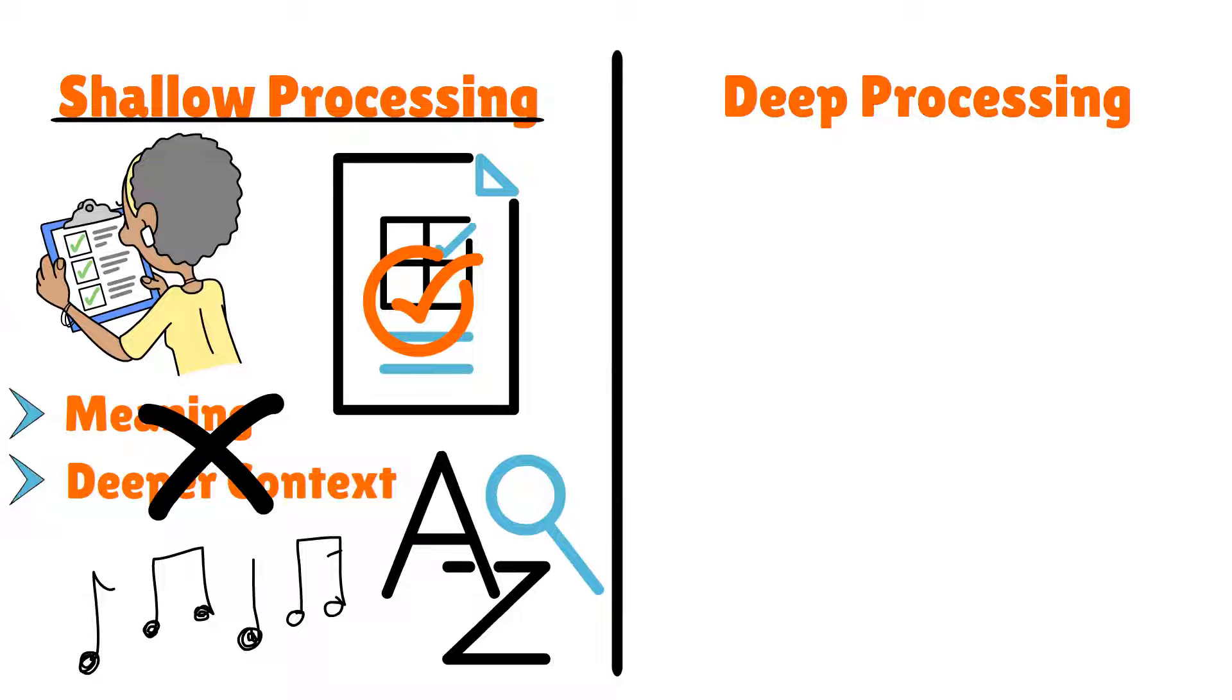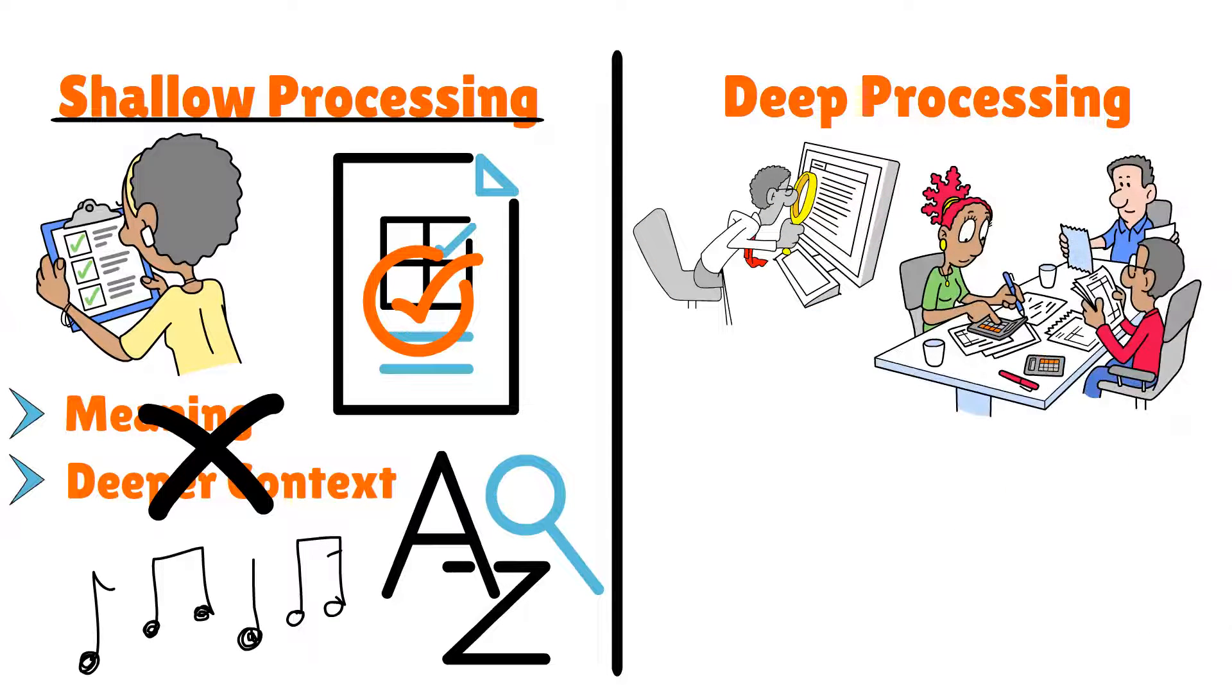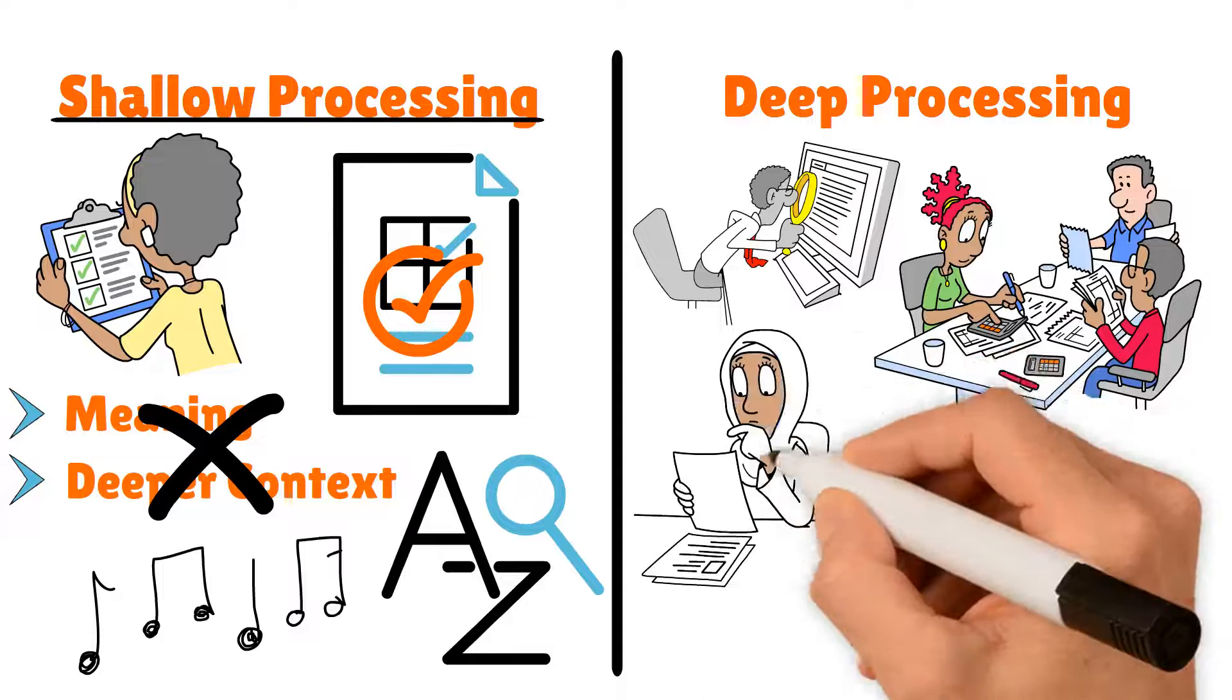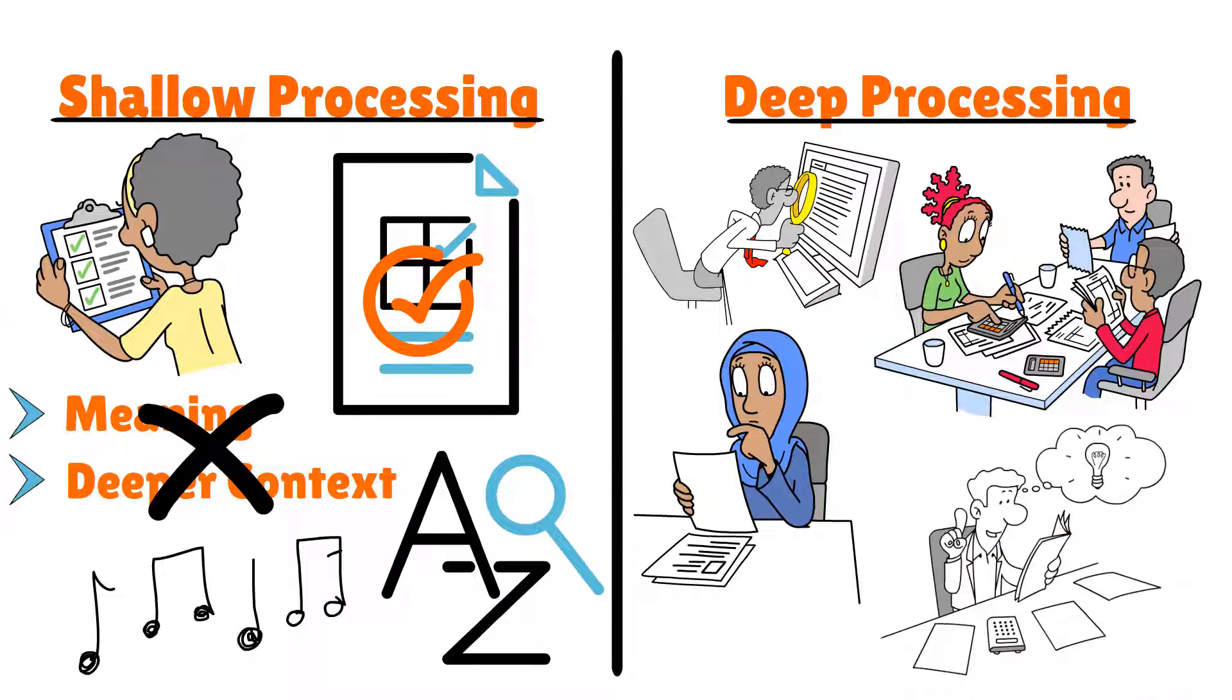Deep processing, on the other hand, involves a more meaningful analysis of information. It requires us to engage with the content on a deeper level, such as by thinking about its significance or how it relates to other information we know. This type of processing helps us understand and remember the information better.